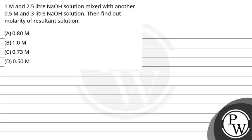Hello, let's read this question. The question is 1 molar and 2.5 liter NaOH solution mixed with another 0.5 molar and 3 liter NaOH solution. Then find out molarity of resultant solution. And the options are 0.80 molar, 1.0 molar, 0.73 molar and 0.50 molar.